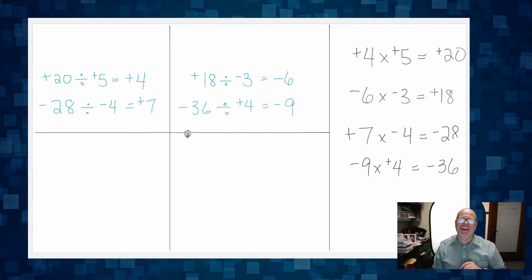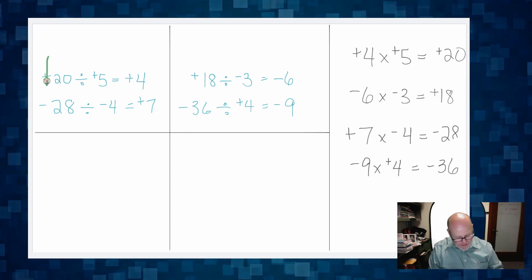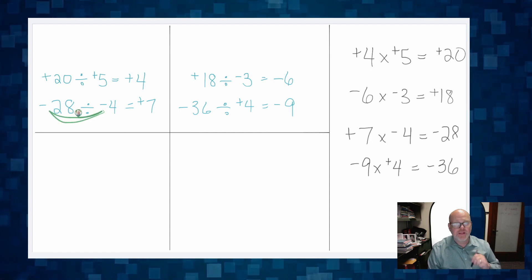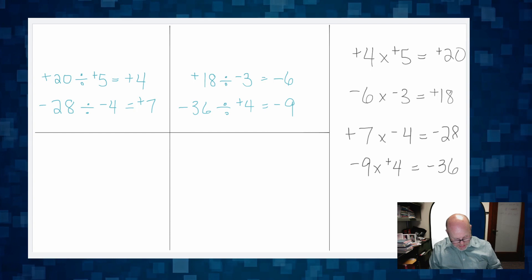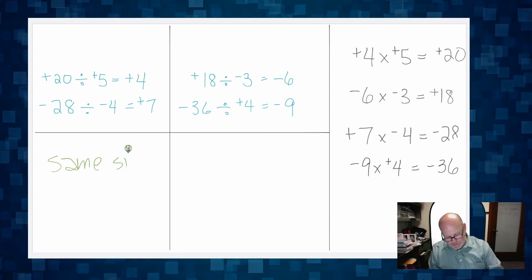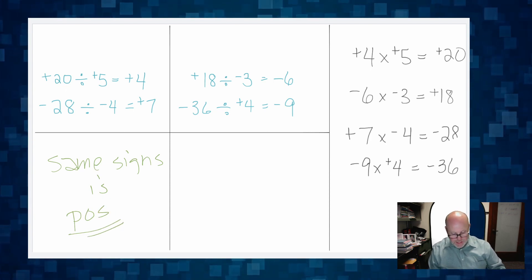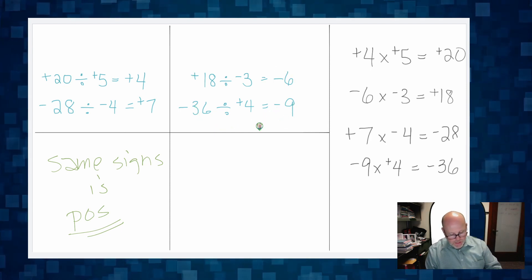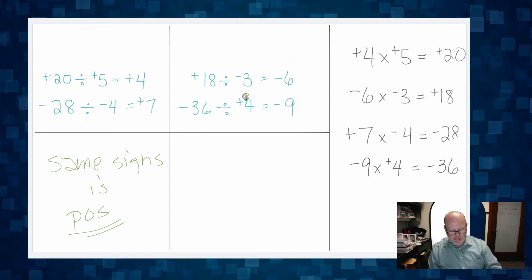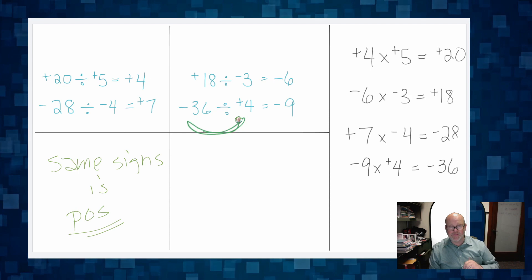Now we start to see it. When the signs are both positive, the answer is positive. When the signs are both negative, the answer is also positive. In other words, same signs give a positive quotient. And looking at the other cases: a positive divided by a negative is negative, and a negative divided by a positive is negative — different signs give a negative result.